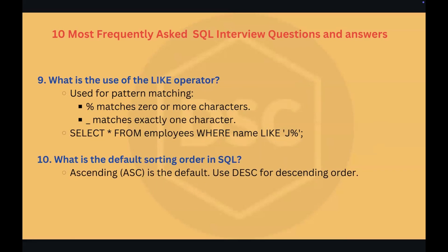Question number nine: what is the use of the LIKE operator? The LIKE operator in SQL is used to search for a specified pattern in a column. It is often used with wildcard characters. The percent symbol (%) represents zero, one, or multiple characters — for example, SELECT * FROM employees WHERE name LIKE 'J%' retrieves all employees whose name starts with J. The underscore (_) represents a single character — for example, SELECT * FROM employees WHERE name LIKE '_J%' retrieves names where J is the second character.